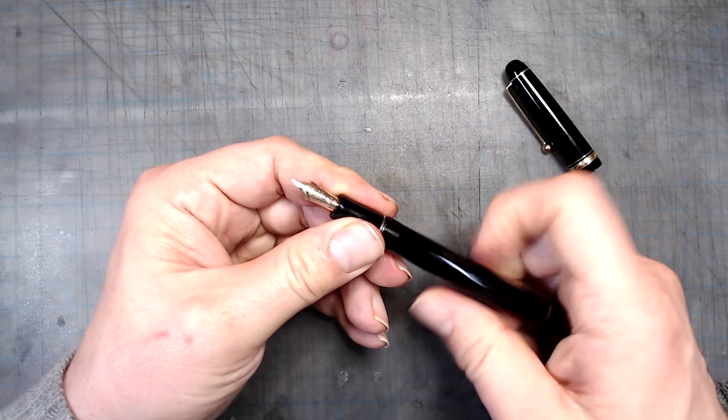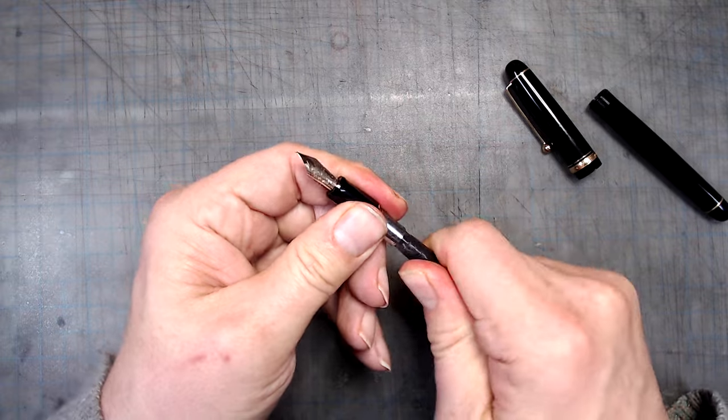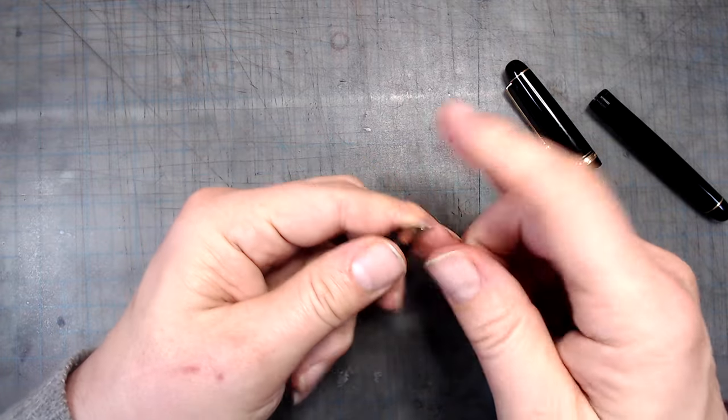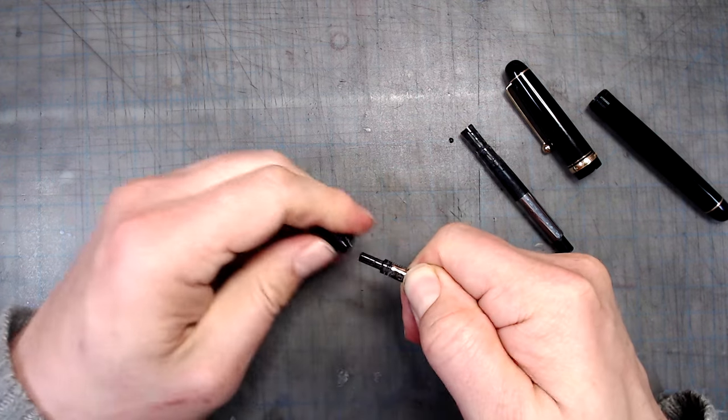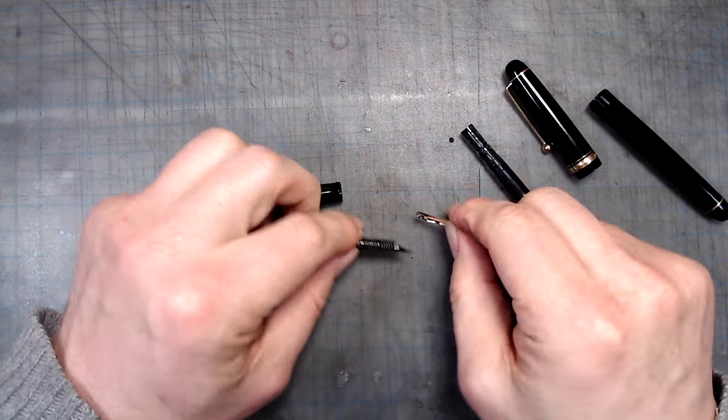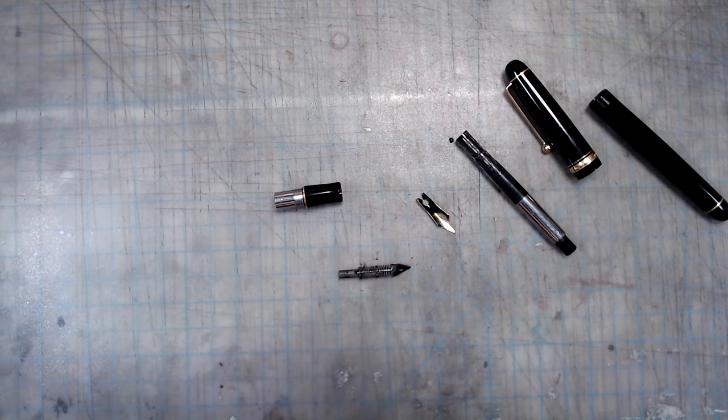Lastly, all of these pens do not use a housing unit. The nibs and feeds pull right out, making these pens a cinch to fully clean. And, since these pens, other than the converters, don't have any moving parts, there's nothing that is subject to wear and tear, so again, with proper maintenance, you can expect perfect performance for decades.